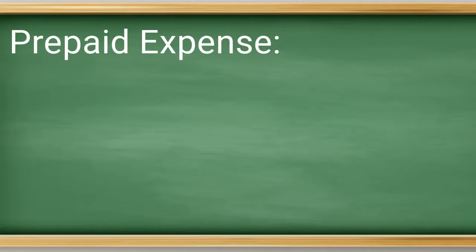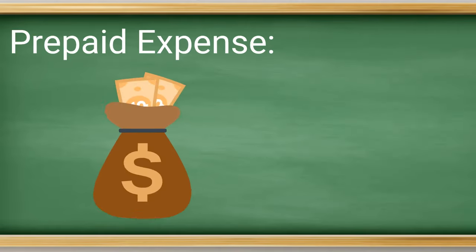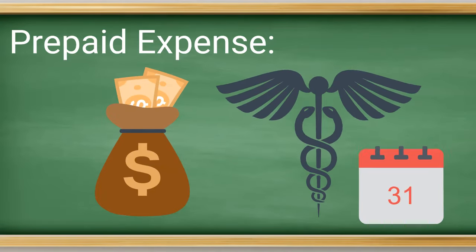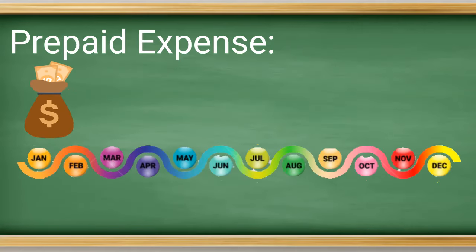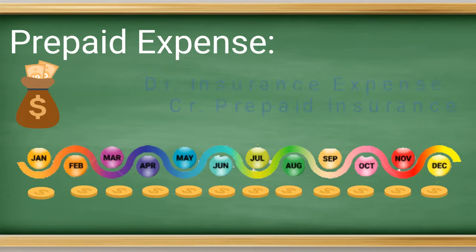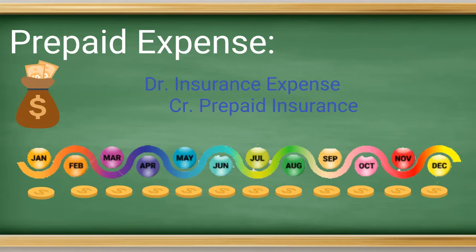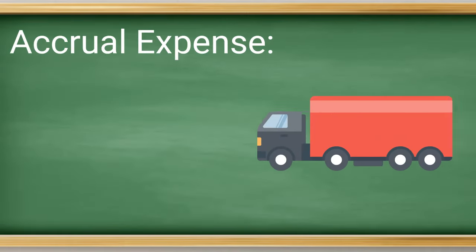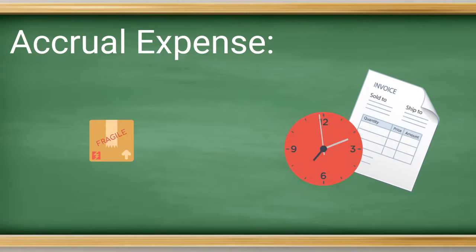The easiest example to think through is prepaid expenses. Let's say you paid cash for insurance for one year. You have essentially made a payment for a benefit you will receive over the one year, so each month you will need to record the benefit, or one month's worth of expense for that insurance. The entry for the monthly expense and to reduce your prepaid is considered the adjusting entry.